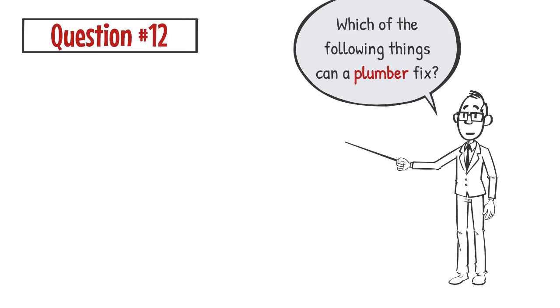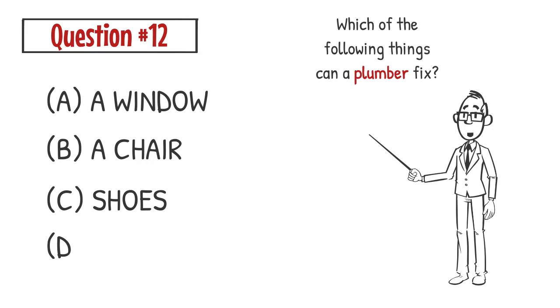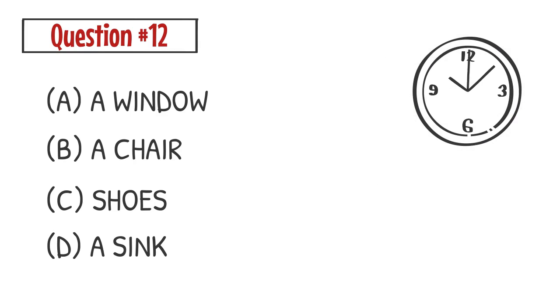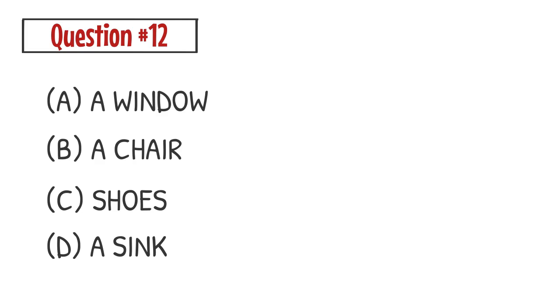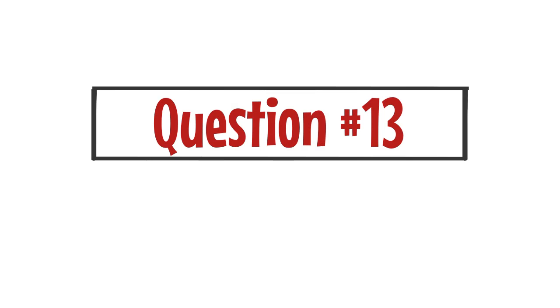Question number 12: Which of the following things can a plumber fix? A. A window B. A chair C. Shoes D. A sink. The correct answer is D. A plumber can fix a sink.